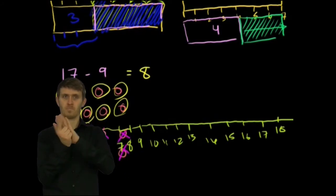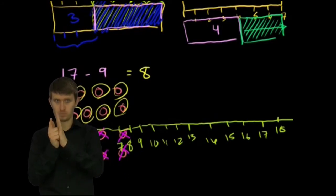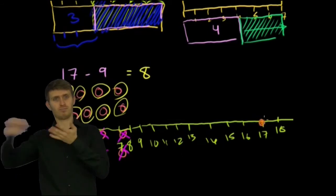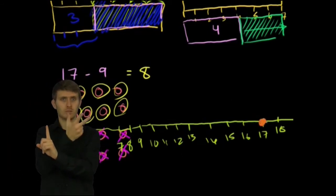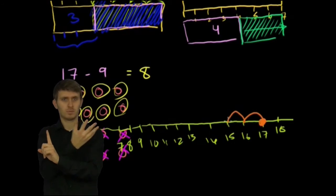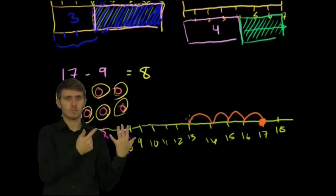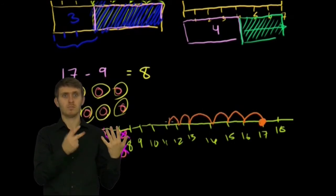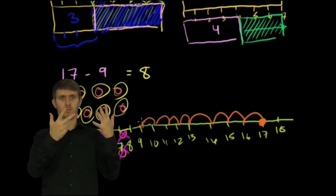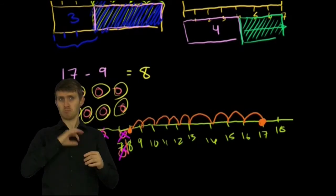But I start at 17. I could start at 17 and take away 9 from it. So I go 1, 2, 3, 4, 5, 6, 7, 8, 9. And once again, we are left at 8. Now this was, at least in my head, a little bit cleaner and faster than this one.